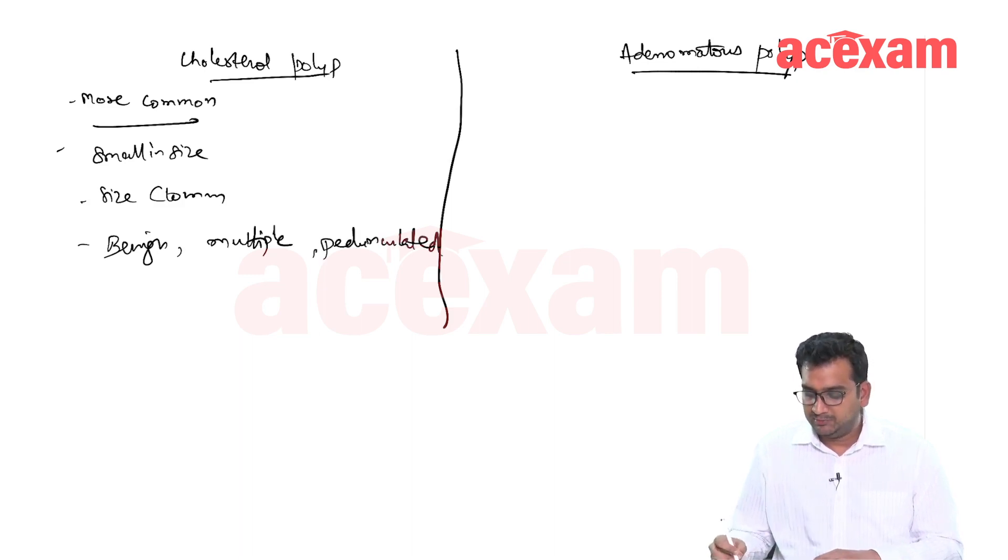On the other hand, the adenomatous polyps are less common. Large in size, generally more than 10 mm. They are premalignant, single and sessile.